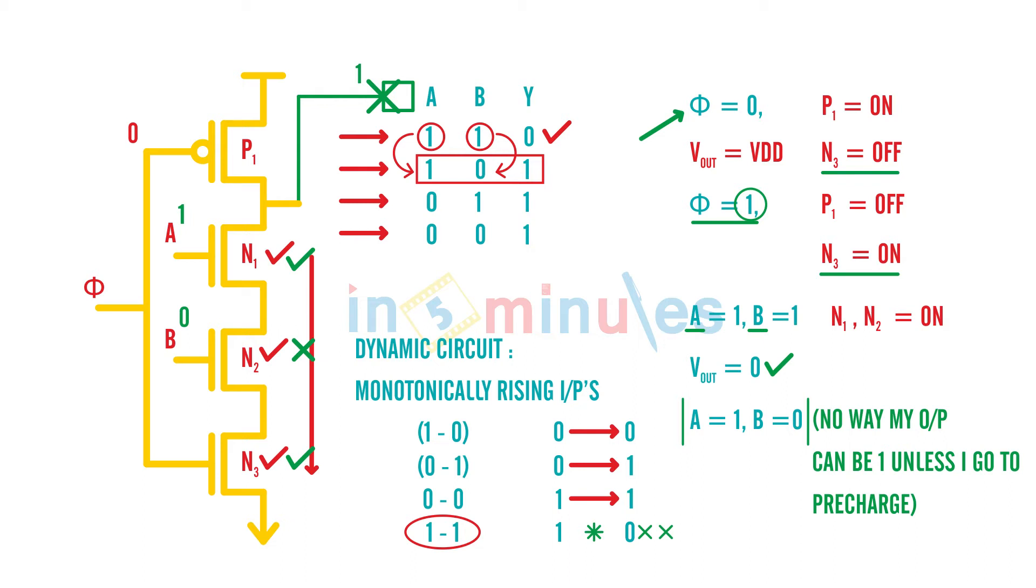Welcome to In Five Minutes. The major drawback of dynamic circuits is that the inputs have to be monotonically rising. If not, you see that the functionality is not achieved correctly. So in order to solve this problem, what we do...